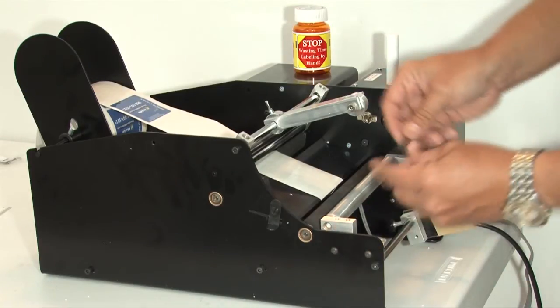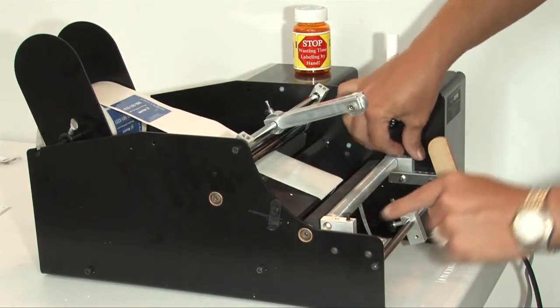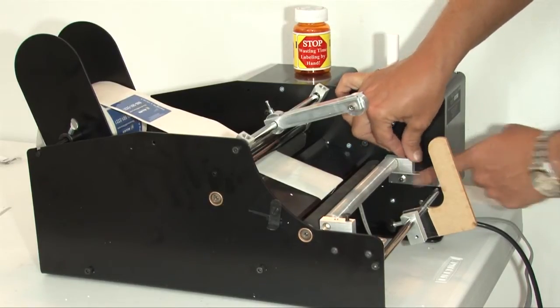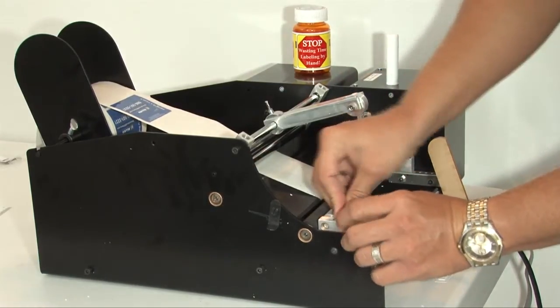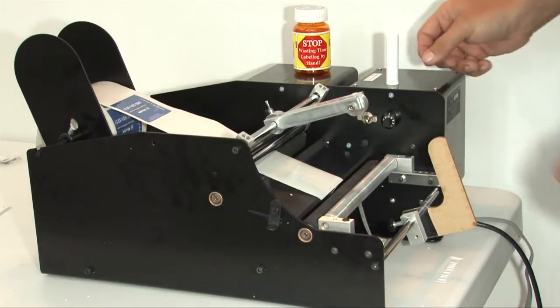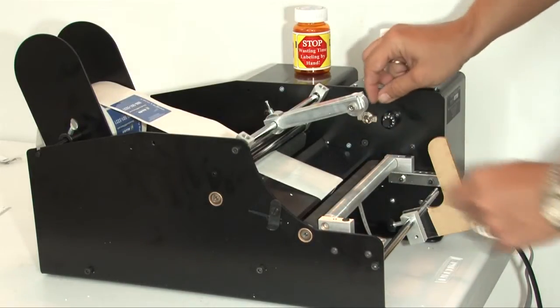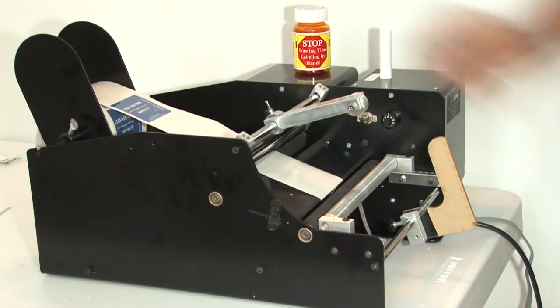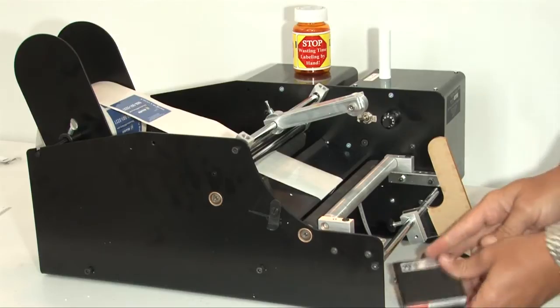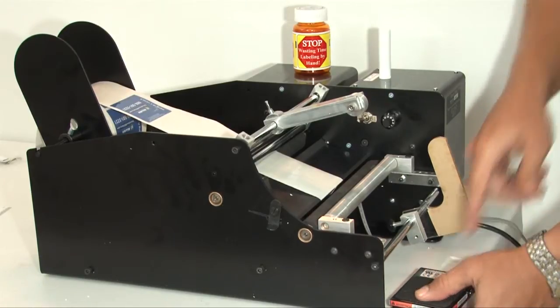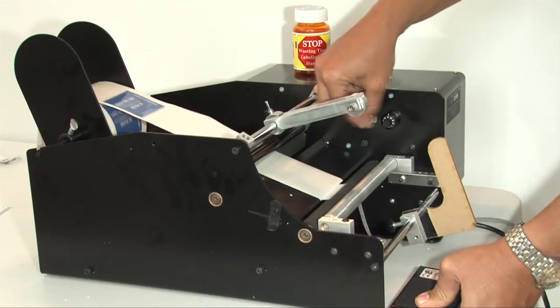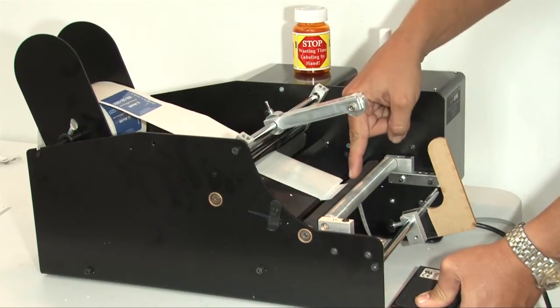This allows you to do very small containers, and we've been able to label things as actually as small as a quarter of an inch. We're going to lock the bottle roller into the forwardmost position on the brackets. Then the next thing we're going to do is a way to precisionally align the label with the container. So we're going to take the foot switch and hold the foot switch down.